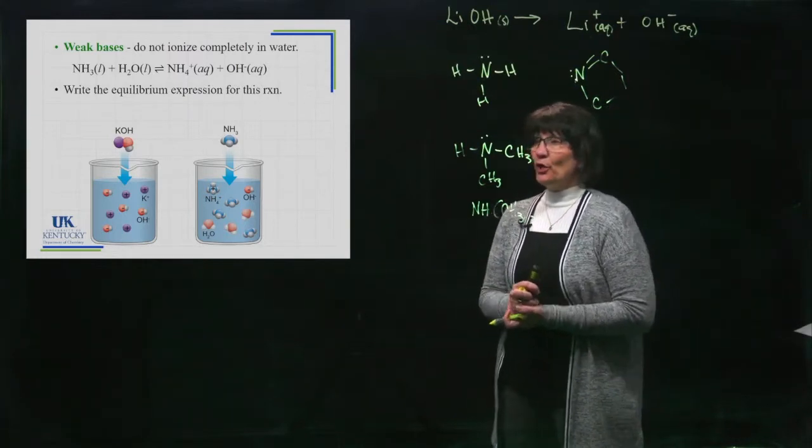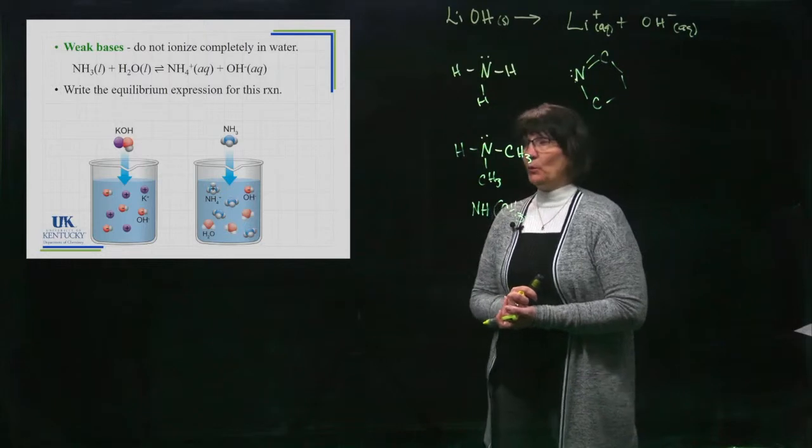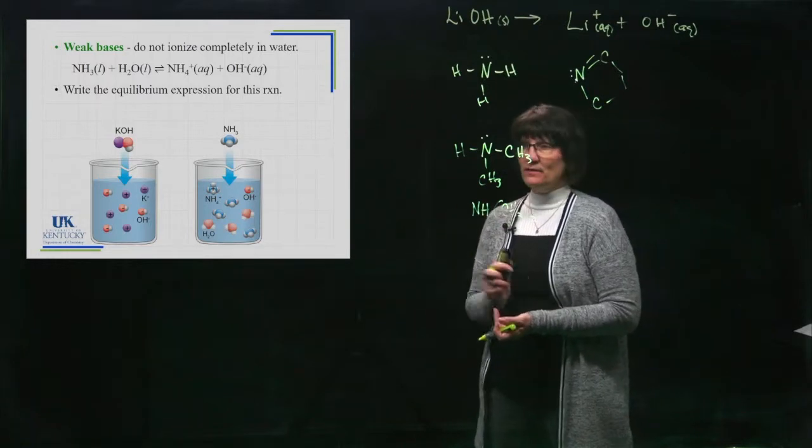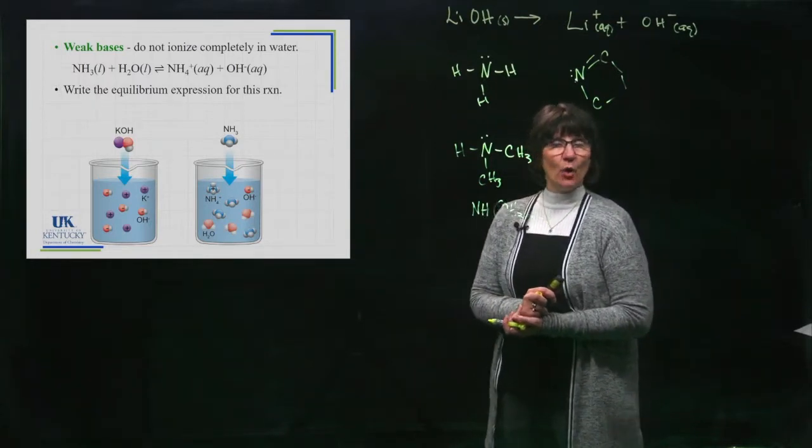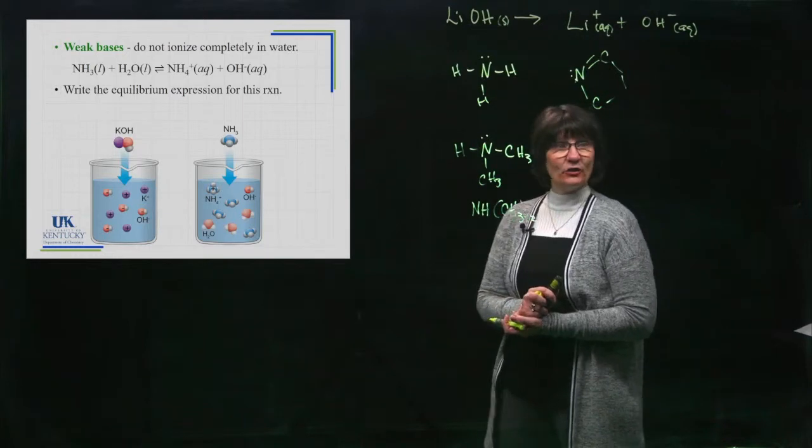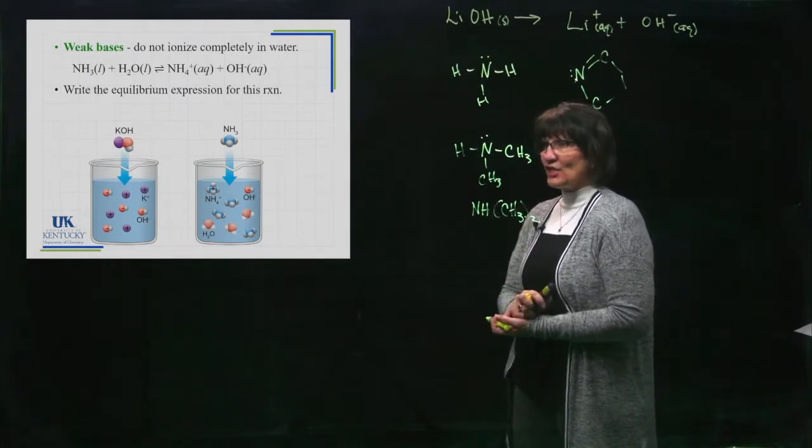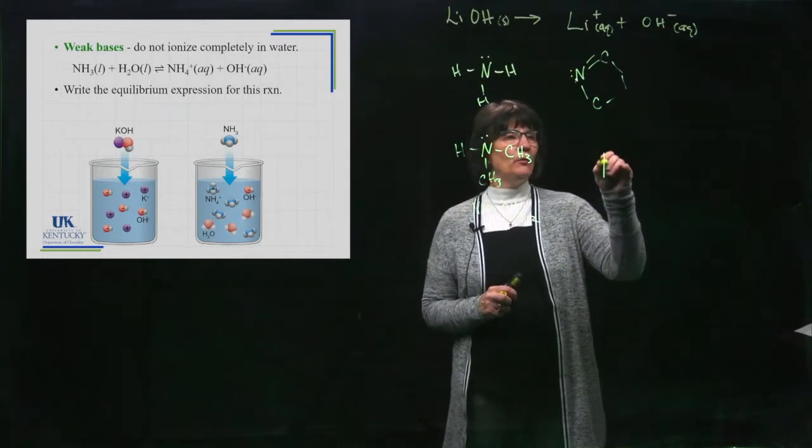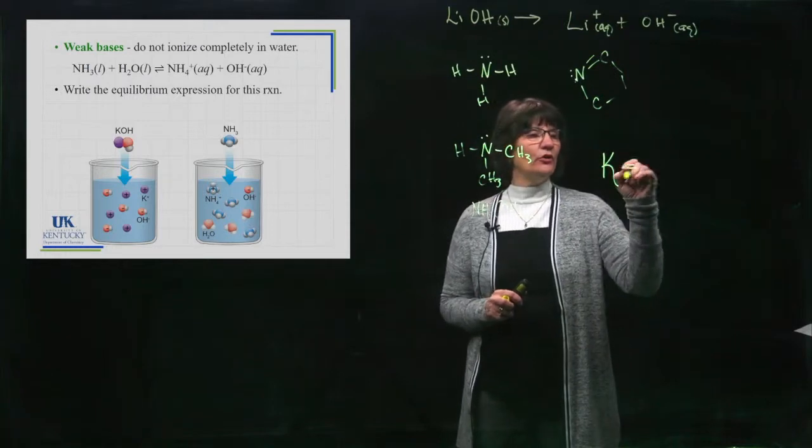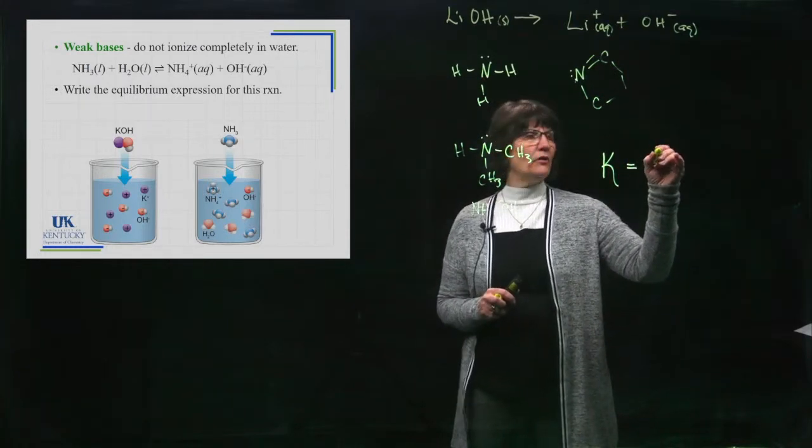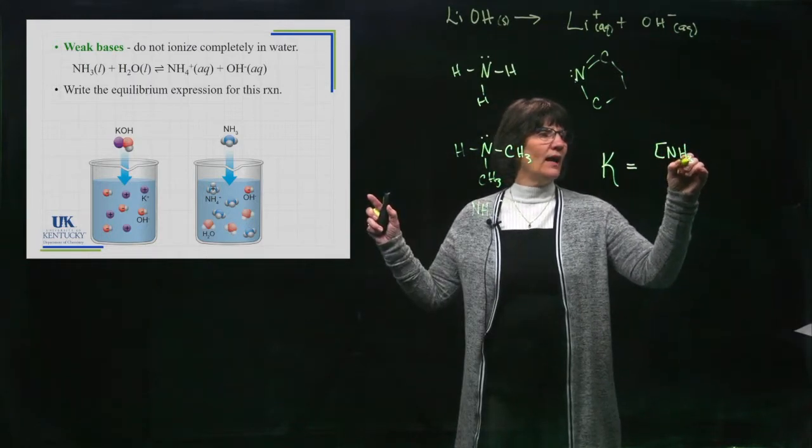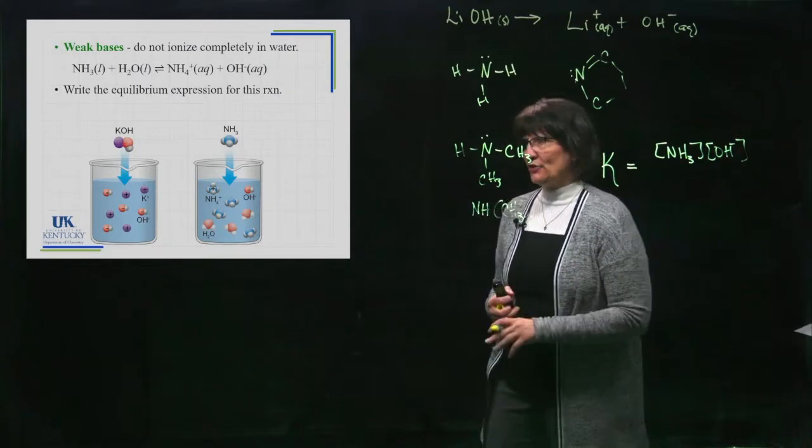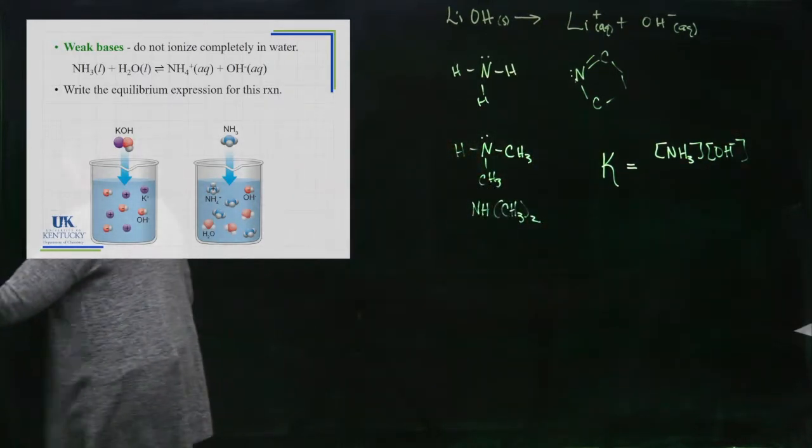When it's weak, you would write the reaction that you're working with. It's a proton swap, and now the water is donating to the base, so you don't end up with H3O+, you end up with OH- in there, so it meets the description of being a base. For that reaction, let's write the equilibrium constant expression. There is an error in that slide I just now recognized. There's not supposed to be an L after NH3. This is actually supposed to be dissolved in the water, so it's supposed to be an AQ.